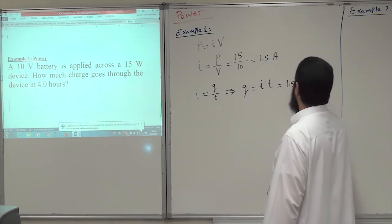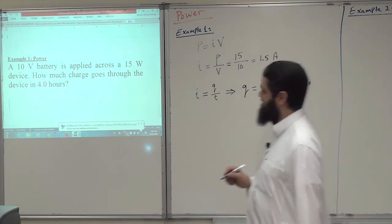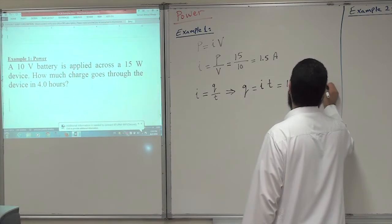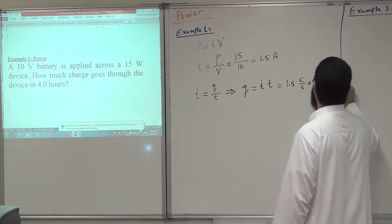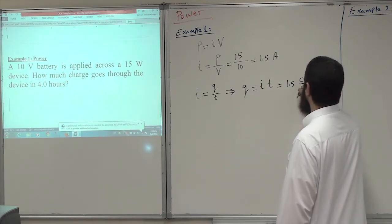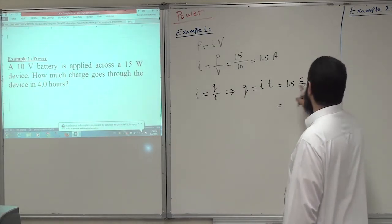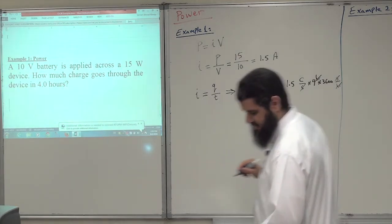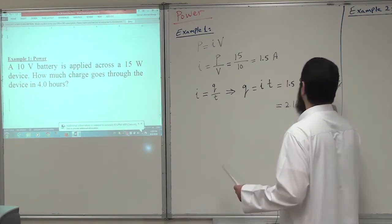Ampere is the same as coulombs per second. Time should be expressed in seconds, so this will be four hours multiplied by 3600 seconds per hour. Hour will cancel with hour, second will cancel with second, and we are left with the charge. So it will be 1.5 multiplied by 4 multiplied by 3600. The answer is 2.16 × 10 to the power 4 coulombs.